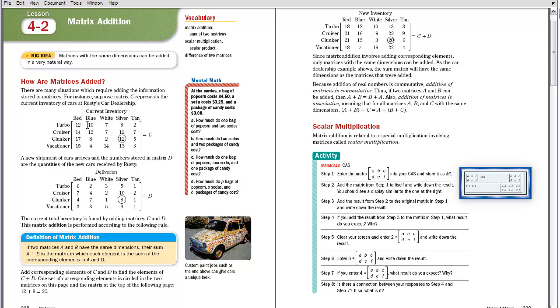So when we add matrices, these two matrices have the same dimension. They're both 4 rows by 1, 2, 3, 4, 5 columns. So they're both 4 by 5, so I can add them together.